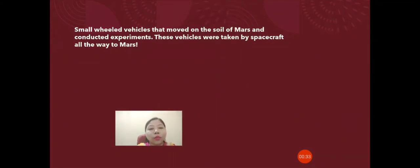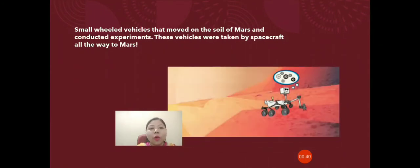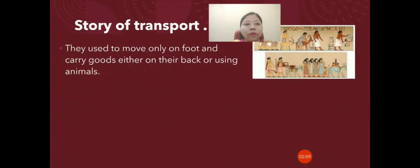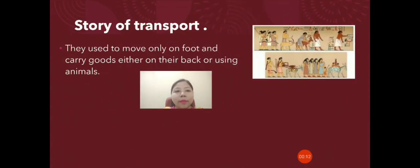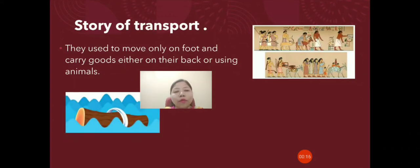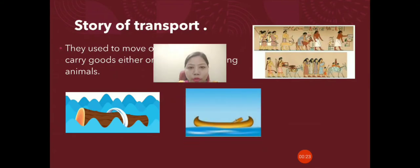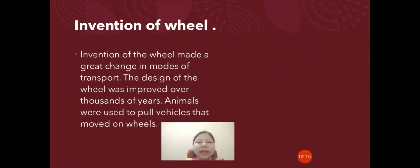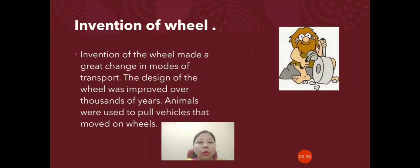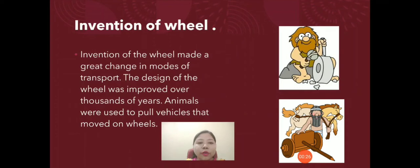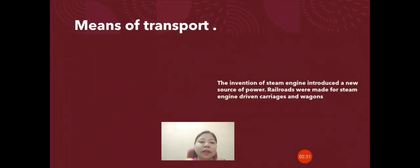Small wheeled vehicles have also moved on the soil of Mars and conducted experiments — these vehicles were taken by spacecraft all the way to Mars. In ancient times, people used to move only on foot and carry goods either on their back or using animals. Later, they found that logs float on water and used them to make boats for transport. The invention of the wheel made a great change in modes of transport, and its design was improved over thousands of years. Animals were used to pull wheeled vehicles, and then the invention of the steam engine introduced a new source of power.